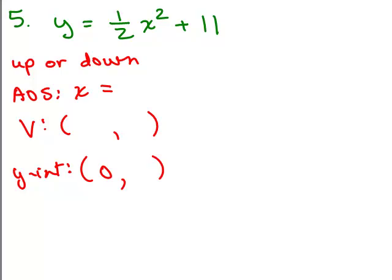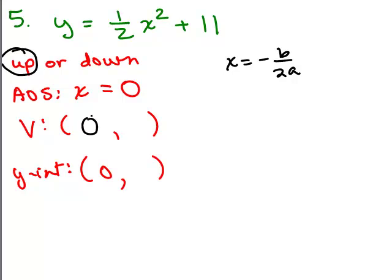Okay, next problem — try it on your own first. The coefficient of x squared is 1 half, which is positive, so this goes up. For the axis of symmetry, there's no x term, so it's just x equals 0. You could also use x equals negative b over 2a and you'll get 0. So for the vertex, putting in 0 for x gives you 11. When there's no x term, that constant will always be the y value for the vertex. The y-intercept is the same: put in 0 for x and you get (0, 11). So the vertex and the y-intercept happen to be the same point.